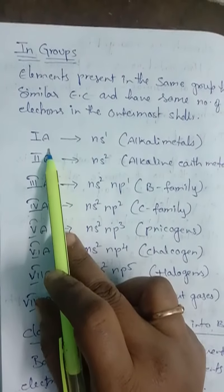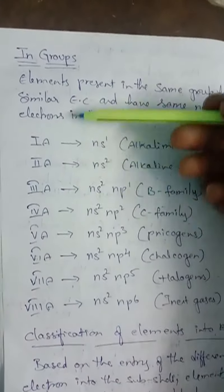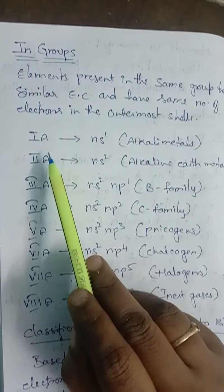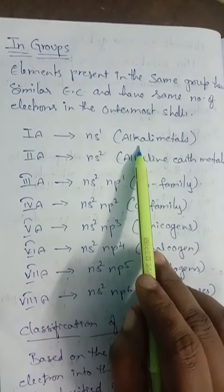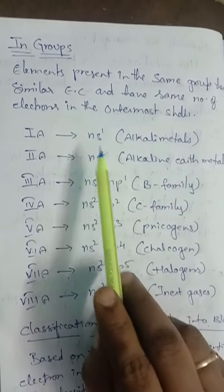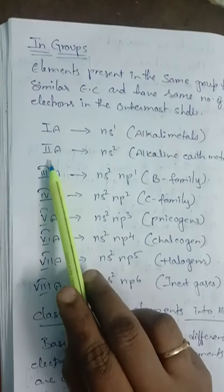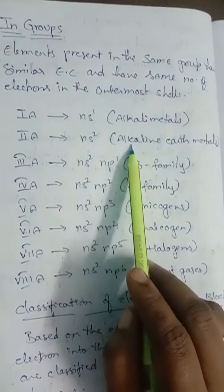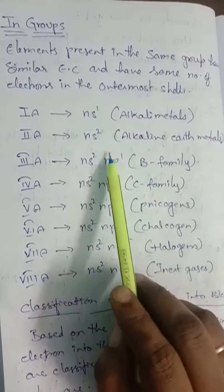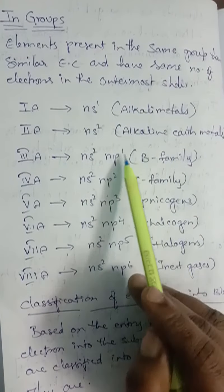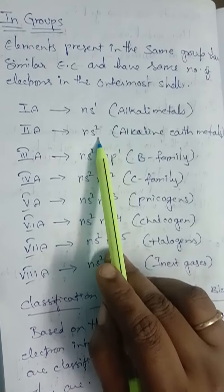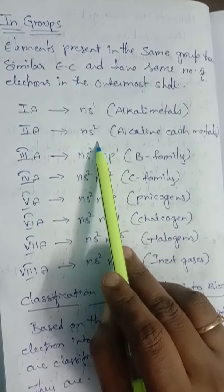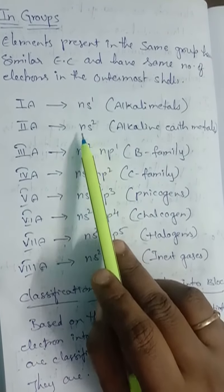The vertical columns are called groups or families. The elements of group 1, also called alkali metals, have only one electron in their outermost shell — their configuration is ns1. The second group elements, with configuration ns2, are known as alkaline earth metals; they have two electrons in their outermost shell. That is why they have the electronic configuration ns2.